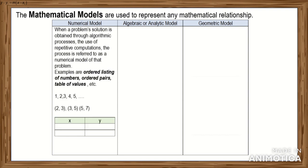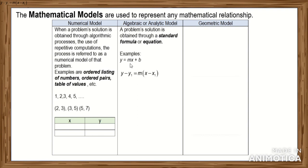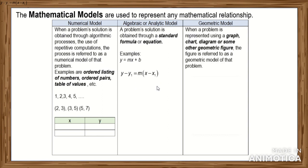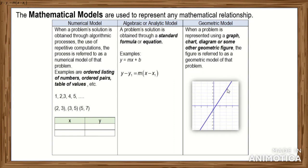Examples of the numerical model include ordered listings of numbers such as 1, 2, 3, 4, 5, and ordered pairs — points with coordinates (2,3), (3,5), (5,7) — and a table of values. We make use of an algebraic or analytical model for a problem solution obtained through a standard formula or equation, such as the slope-intercept form y = mx + b and the point-slope form y - y₁ = m(x - x₁). When a problem is represented using a graph, chart, diagram, or geometric figure, that figure is referred to as the geometric model of the problem. An example is the graph of the equation of a line.